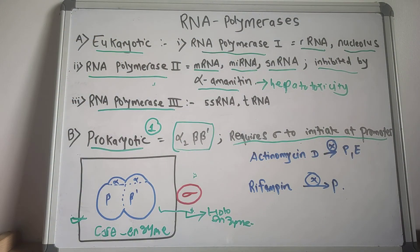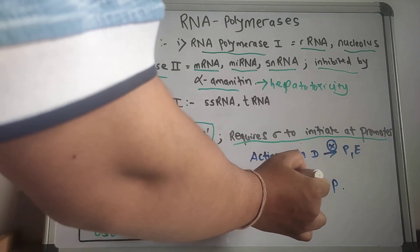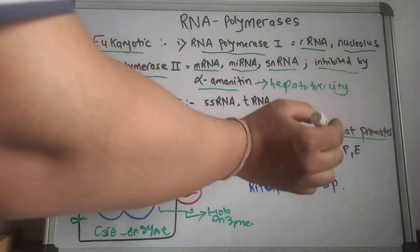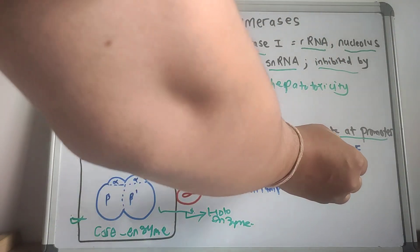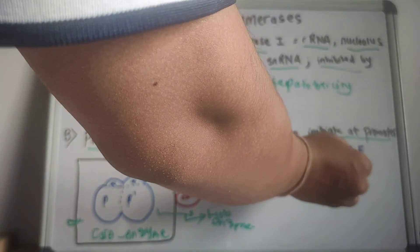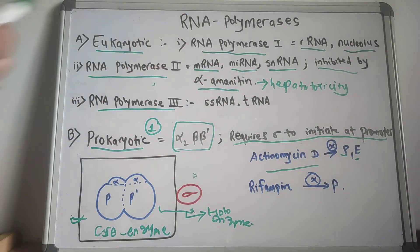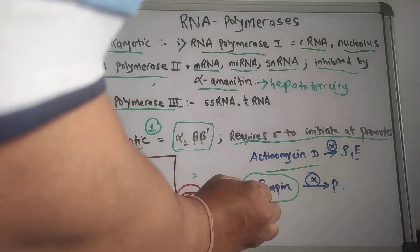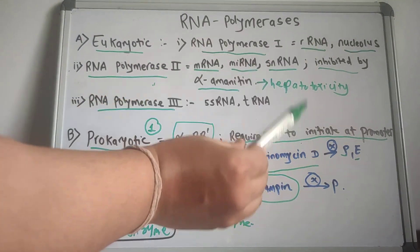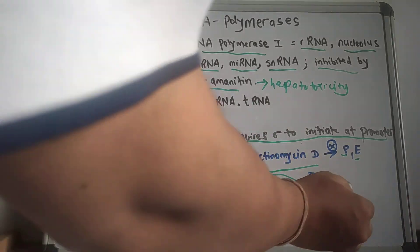There is one drug called actinomycin D which inhibits the RNA polymerase of both prokaryotes and eukaryotes, whereas rifampin inhibits the RNA polymerase of prokaryotes only.